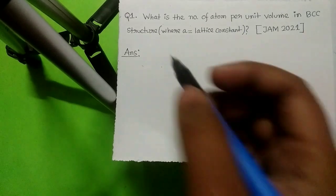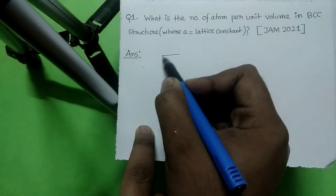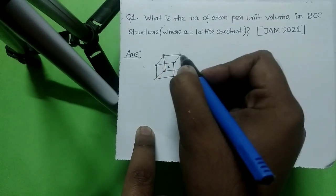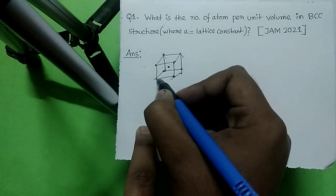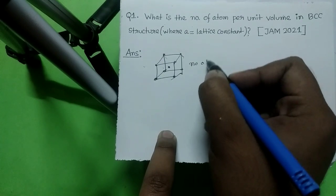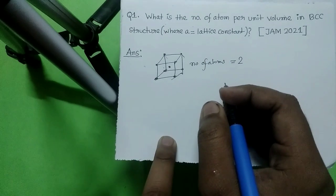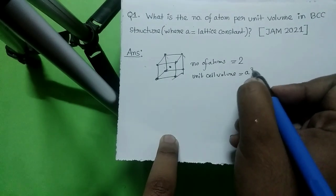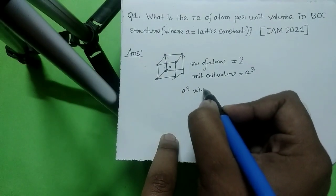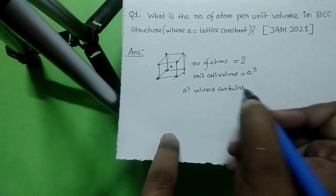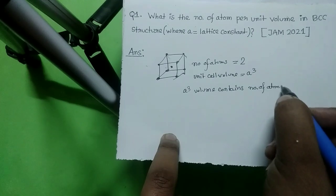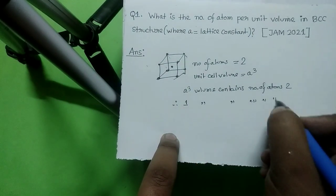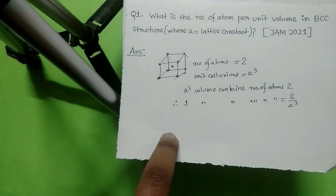In a BCC structure, the number of atoms is equal to 2, and its volume is equal to a-cubed. Hence, a-cubed volume contains 2 atoms. Therefore, per unit volume, the number of atoms is equal to 2 divided by a-cubed. Hence the answer is 2/a³.